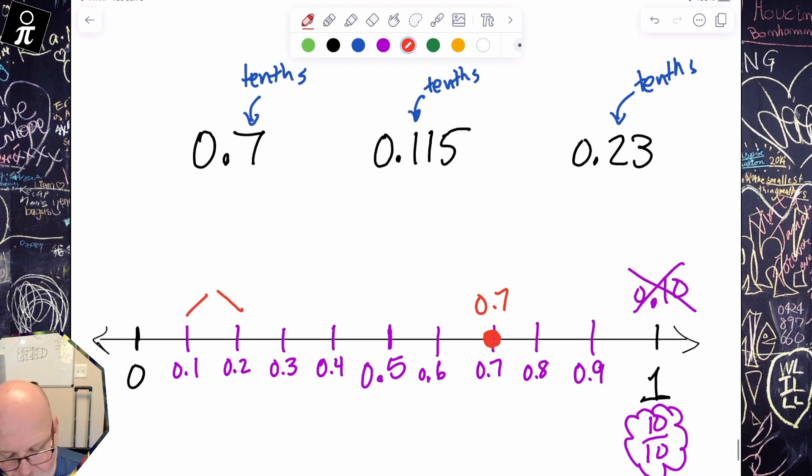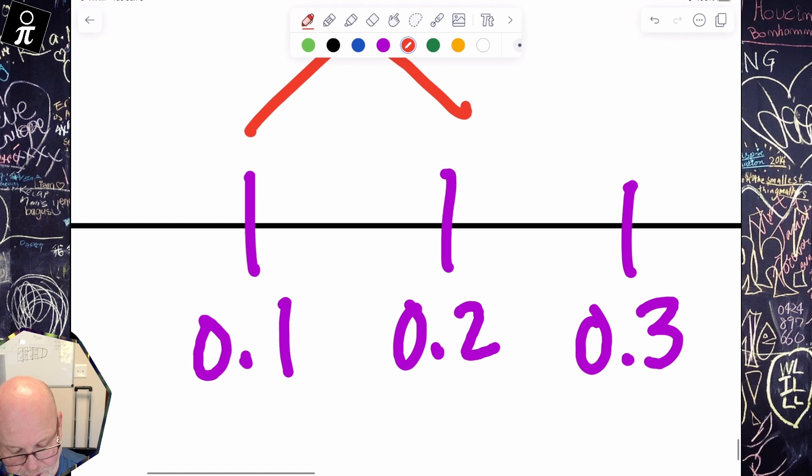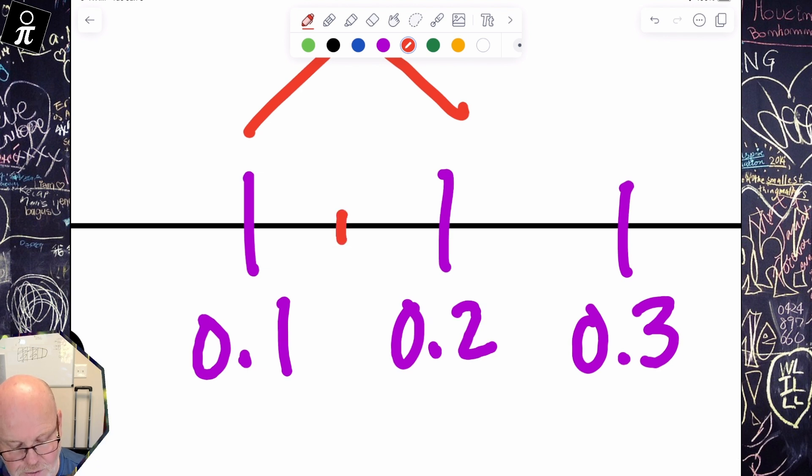Now that next place value, which is called the hundredths, hundredths, means this is crazy. It means we have to chop up this interval into 10 equal size pieces. One, two, three, four, five, six, seven, eight, nine, 10. Oh my goodness.